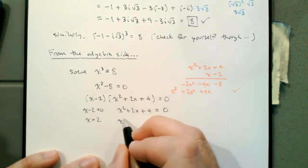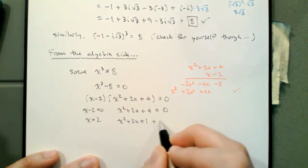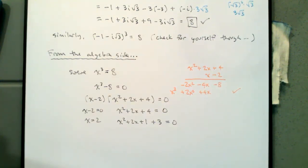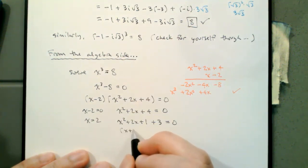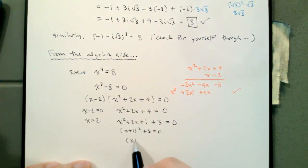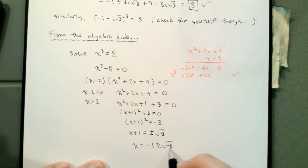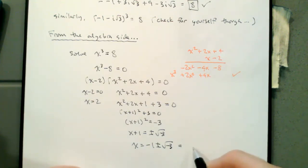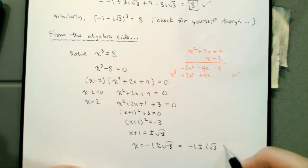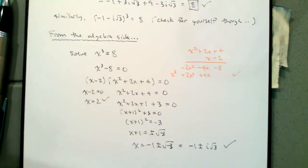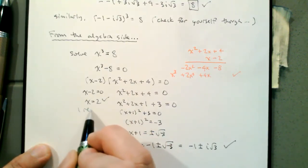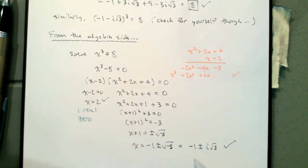We can't find real factors of 4 whose sum equals 2, so we'll need complex solutions. Rather than using the quadratic formula, since the leading coefficient is 1 and the x-coefficient is even, we'll complete the square. Adding 1 to complete the square: (x plus 1) squared minus 3 equals 0. Taking square roots of both sides: x plus 1 equals plus or minus root of negative 3. Subtracting 1: x equals negative 1 plus or minus i times root 3. So there are our three zeros — one real zero x equals 2, and two complex non-real zeros x equals negative 1 plus or minus i root 3.